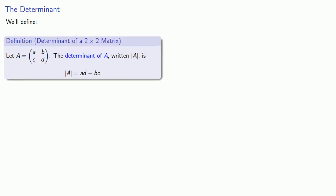This difference of the cross-products seems to be an important quantity, and so we'll define the determinant of a 2 by 2 matrix as follows. Let A be this matrix. The determinant of A, written between bars, is the difference of the cross-products ad minus bc. It's important to remember that these vertical bars do not mean absolute value — the determinant could be positive or negative.